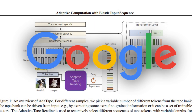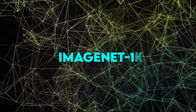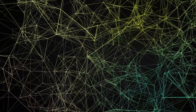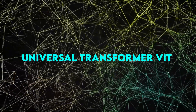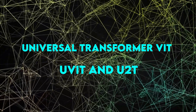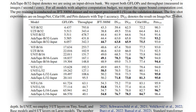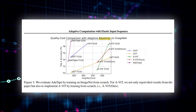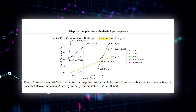Google also conducted a test to evaluate the image classification ability of Adatape. They trained it from scratch on ImageNet 1K and compared its accuracy with other methods, such as AVIT, Universal Transformer ViT (UVIT), and U2T. The test was based on speed measured in the number of images processed per second. The results showed that Adatape outperformed the adaptive transformer baselines in terms of quality and cost trade-offs.